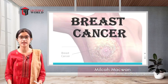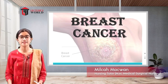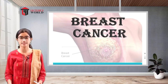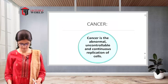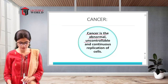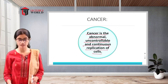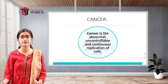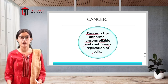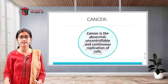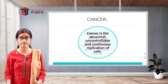Today we shall be discussing breast cancer. When there is an abnormal growth of cells within the body, it is called cancer. If this abnormal growth is present in the breast, it is called breast cancer. Cancer is the abnormal, uncontrollable, and continuous replication of cells. Breast cancer is one of the leading cancers occurring in women worldwide.